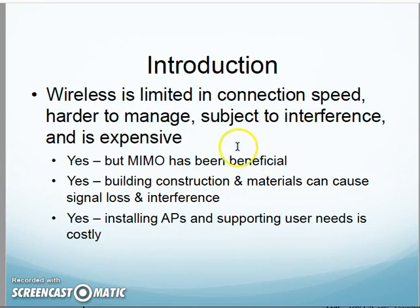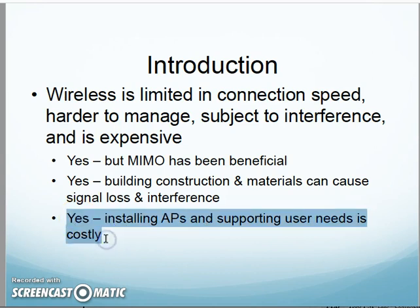Regarding interference, building construction materials can cause signal loss and interference — that has to be factored in. Typically you'll install an access point, test it for range and interference, and make adjustments based on the building's construction, because some materials react to wireless signals in unpredictable ways. As for expense, yes it costs money to install and support APs, but it provides the value of mobility for users with laptops, tablets, and smartphones, and benefits places like schools where guests can connect to guest wireless networks.